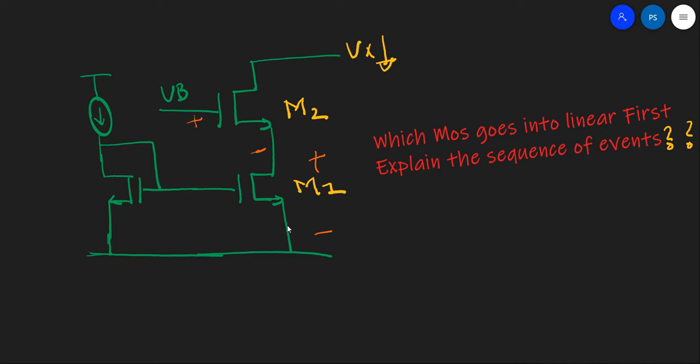And this structure on the right is a cascode structure. The question is, if this is the voltage here, if it is Vx and it goes on reducing, the first question is which MOS goes into linear first out of these two MOSFETs?